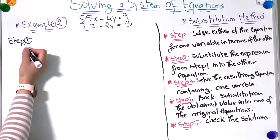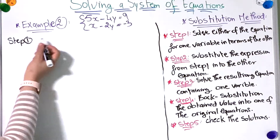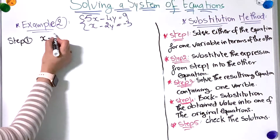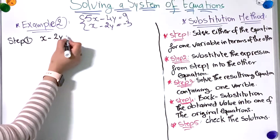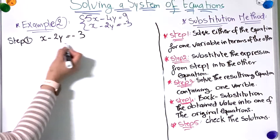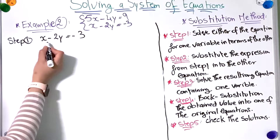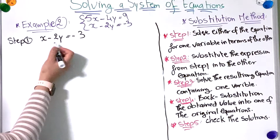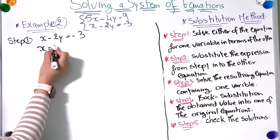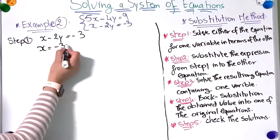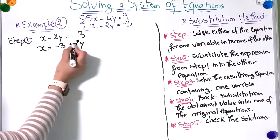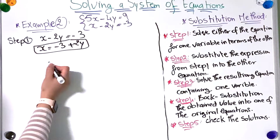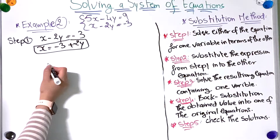I'm going to take the second equation, x minus 2y equals minus 3, and solve for x. I'm going to add 2y to both sides, so x equals minus 3 plus 2y. Now I have found the expression for x.